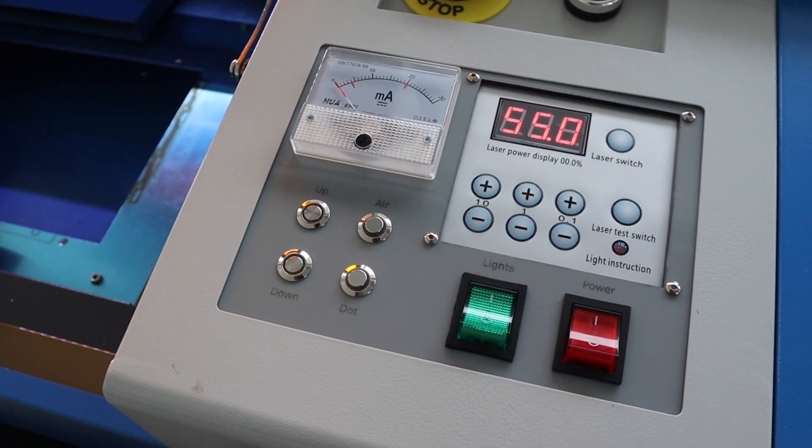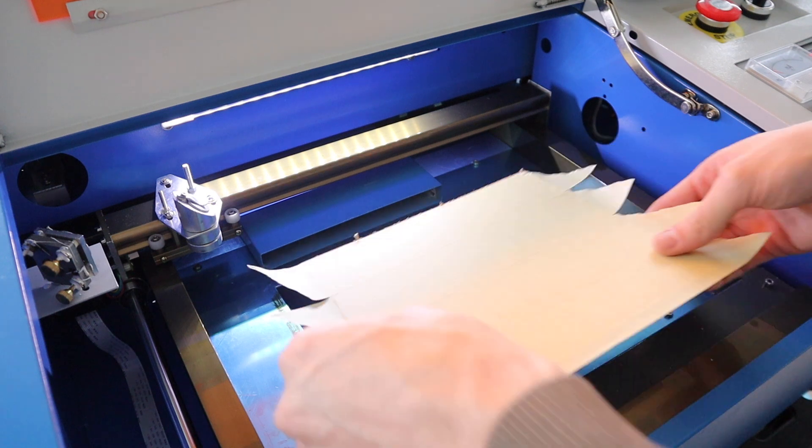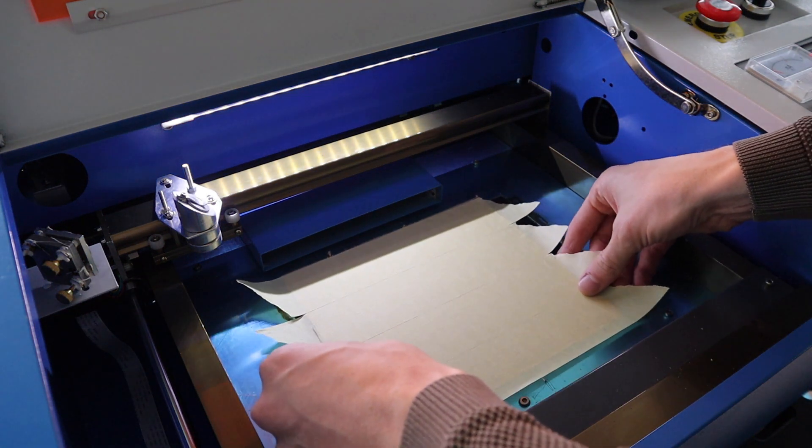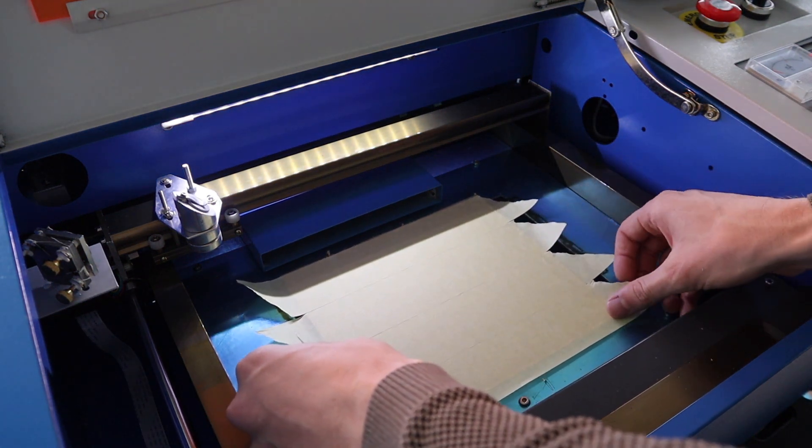I started out by engraving and then cutting the gears. I always use masking tape over the MDF when engraving or cutting so the smoke doesn't mark the surface.